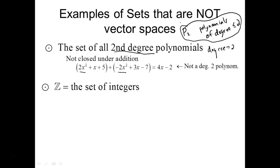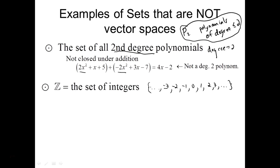Here's a second example. The symbol ℤ, Z with a double bar, stands for the set of integers — an infinite set going on forever in both directions, containing the positive and negative whole numbers and zero. The question is whether it satisfies all ten axioms. Remember, these are the V's — the vectors — while F, the field, is the set of real numbers.